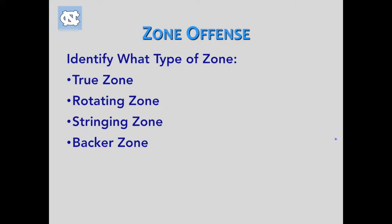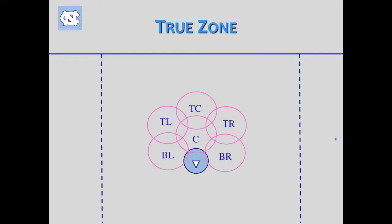In the true zone, you'll have a top center guy, top left, top right, crease guy, and what I call base left and base right. They stay in those spots, overlapping without moving too much. So if you drag their zone, distort it, make it change a little bit, you're going to create gaps in those areas because guys aren't willing to move too much in this type of zone.